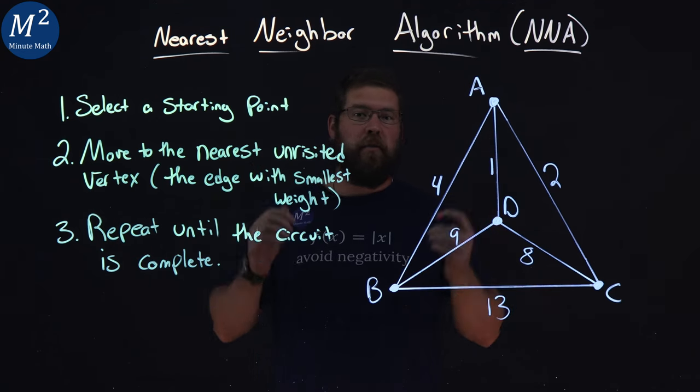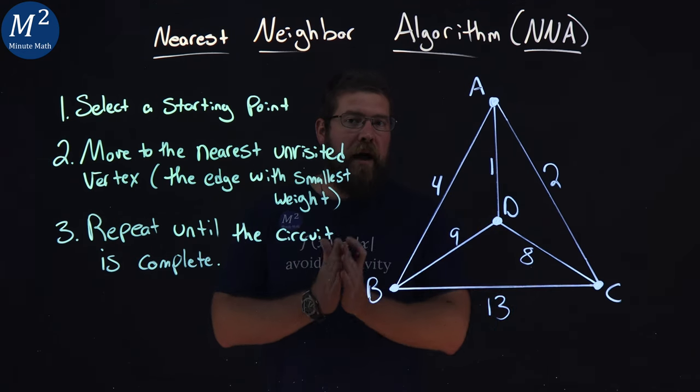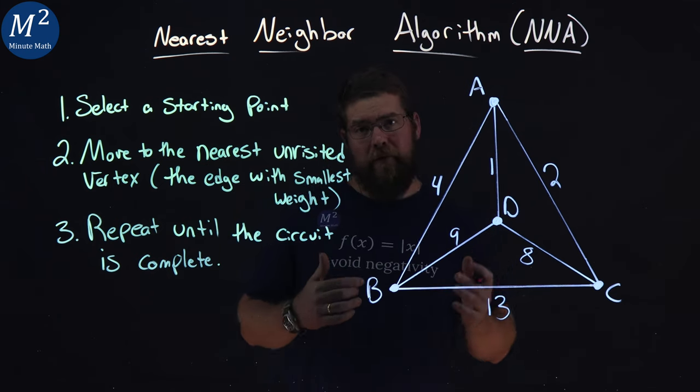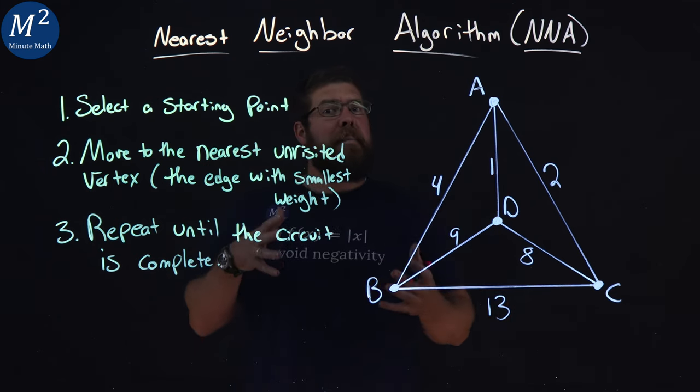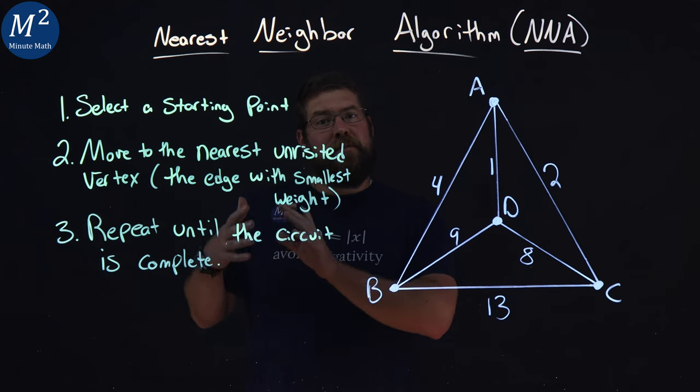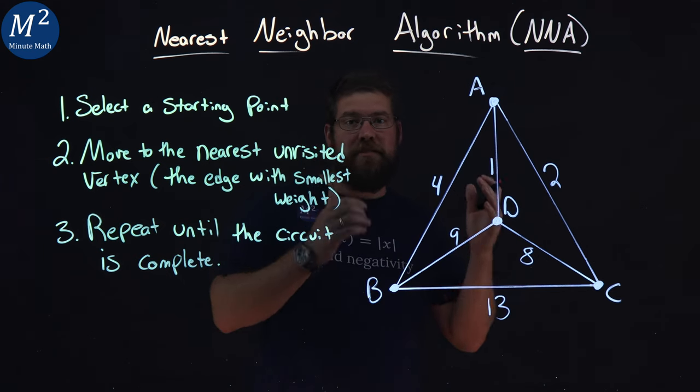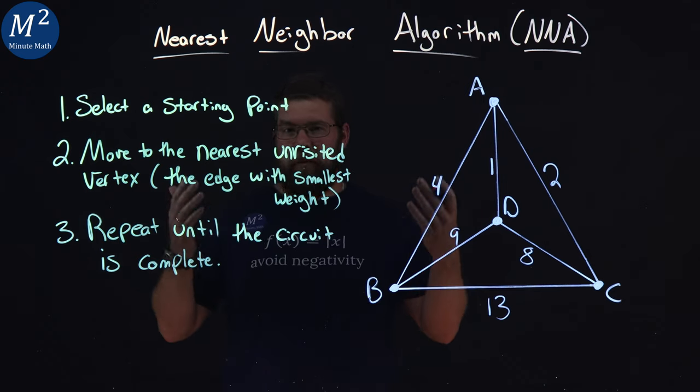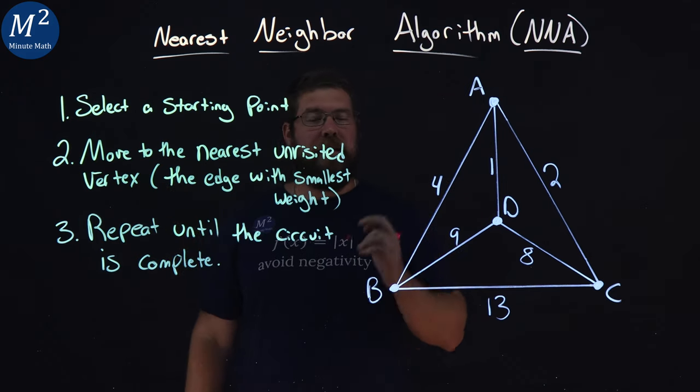The nearest neighbor algorithm can help us find a Hamiltonian circuit on a graph, and it's a method that might help us find the lowest weight of that circuit. Now, it doesn't always work out to be the lowest weight, but let's go learn what the nearest neighbor algorithm is.